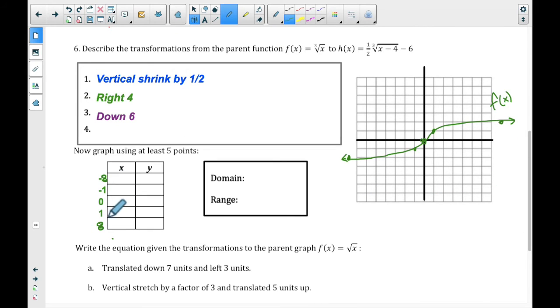Negative 8, negative 1, 0, 1, and 8 is what we're trying to get the inside of the radical to be, because it's a cube, and these are perfect cubes. So to create a negative 8, I would need a negative 4, right? Negative 4 minus 4. To create a negative 1, I would need a 3. To create a 0, of course, I need 4. To create a 1, I would need 5. And to create an 8, a positive 8, I would need 12.